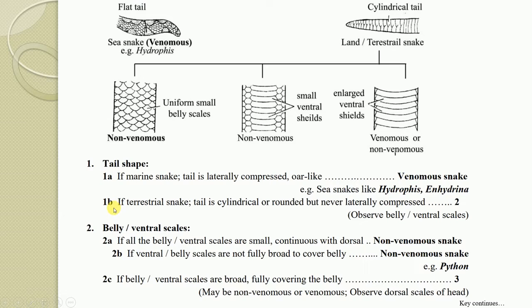Key 1B: If the snake is terrestrial and the tail is cylindrical or rounded — but never laterally compressed — then go to key number 2. Key 2 requires you to observe the belly or ventral scales of the snake. A cylindrical or rounded tail in a land snake may belong to either a venomous or non-venomous snake, so further examination of belly scales is needed.